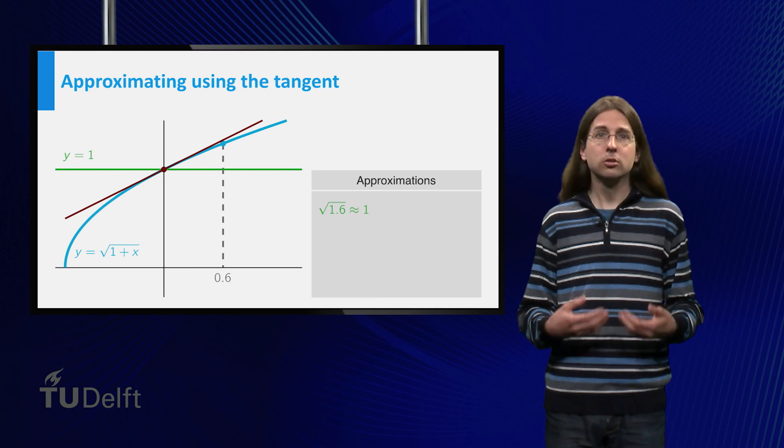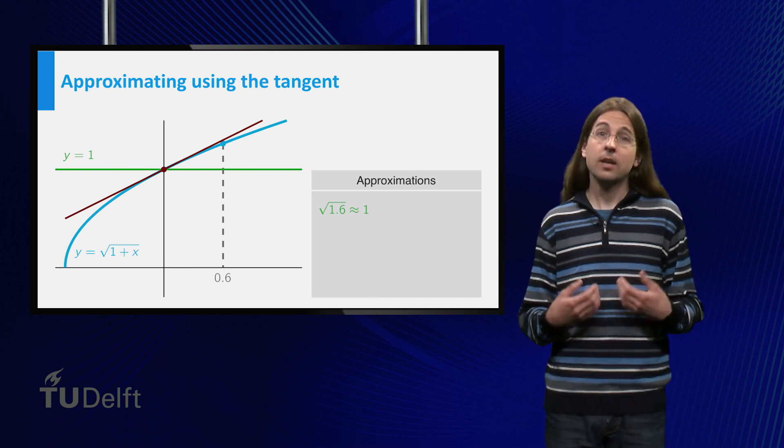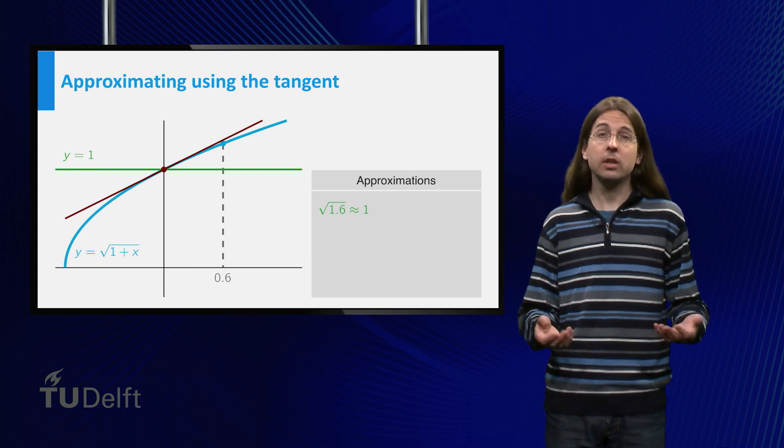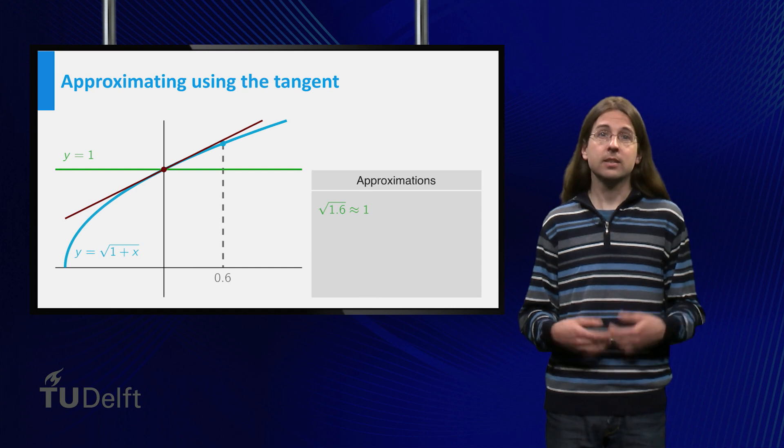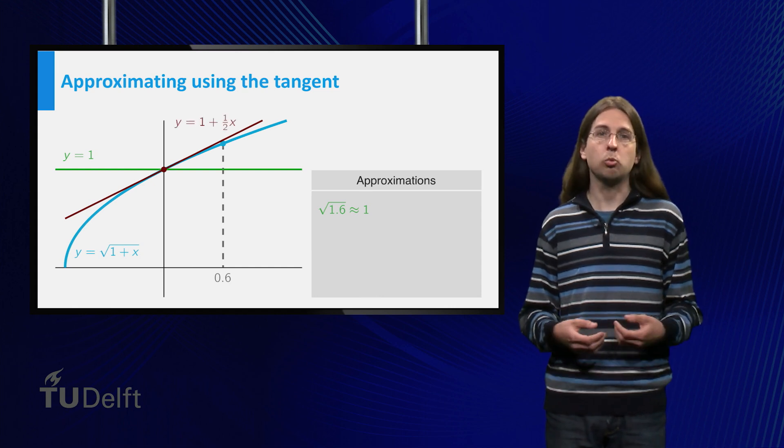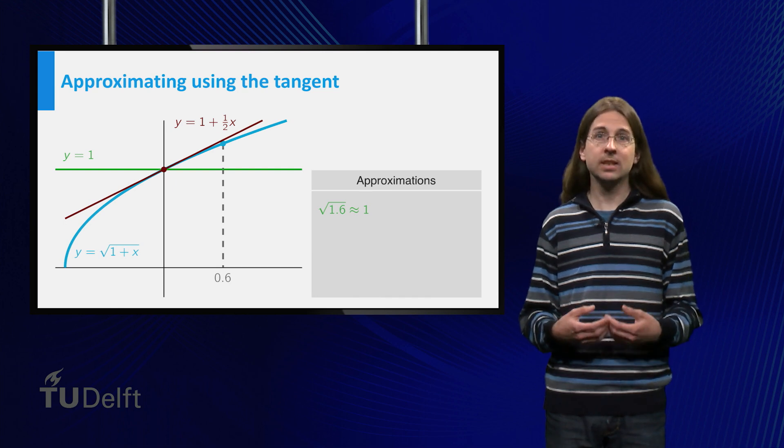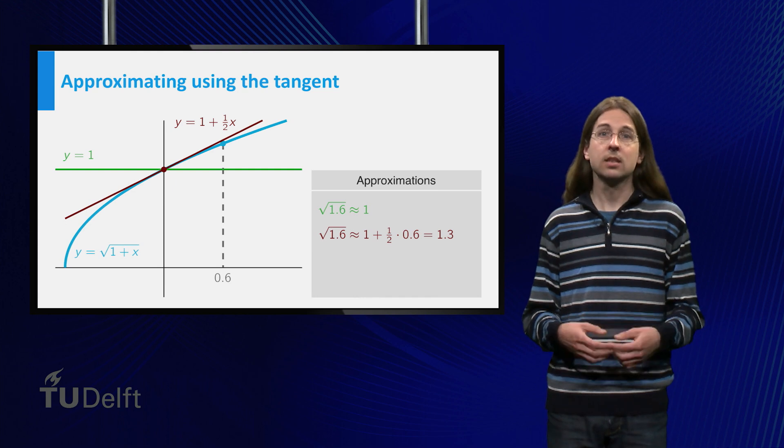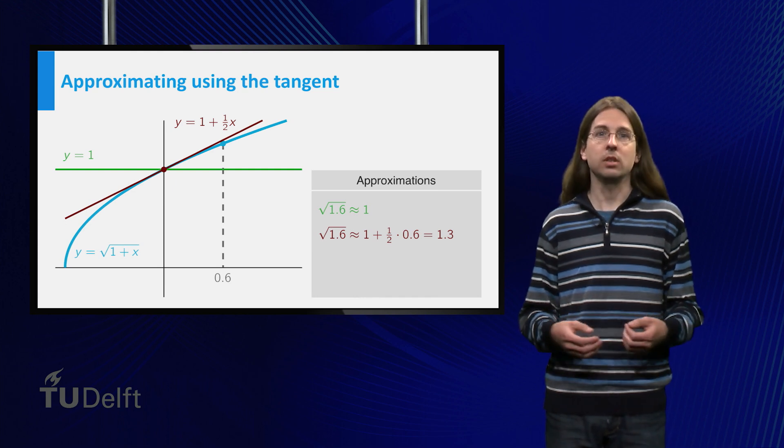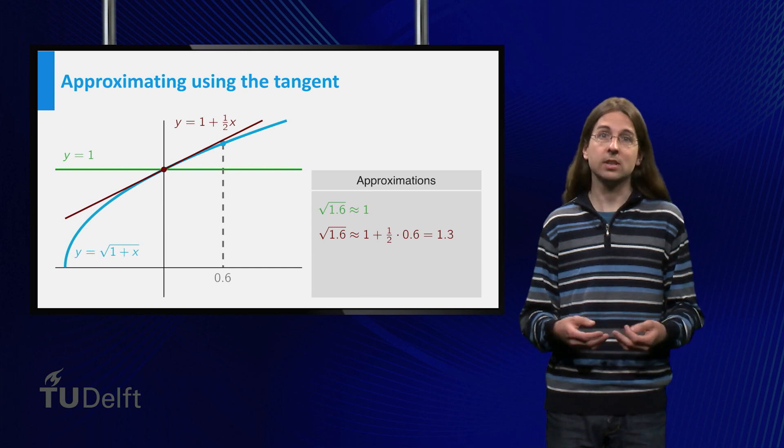In school, you have probably learned how to calculate the equation for the tangent line, and we will review this in week 5. In this case, the tangent line is given by the equation y equals 1 plus x over 2. Plugging x equals 0.6 into this equation, we obtain that the square root of 1.6 is approximately 1.3, which is a better approximation of the square root of 1.6 than 1 is.